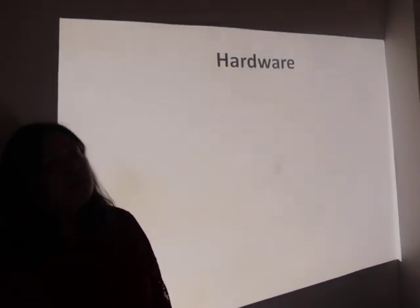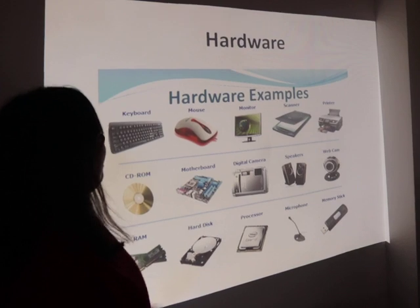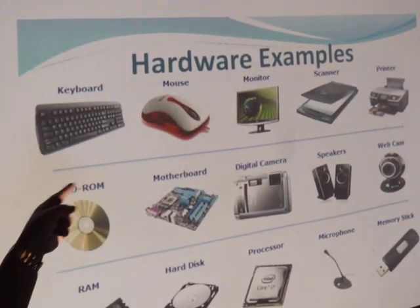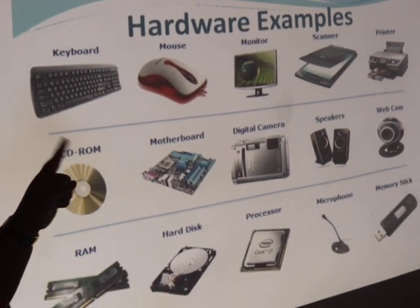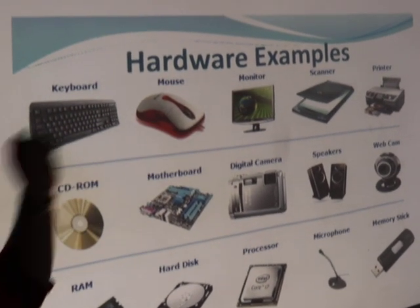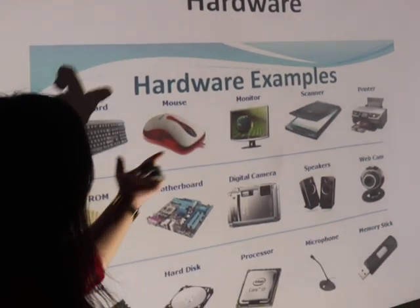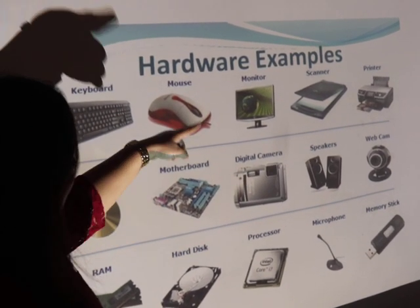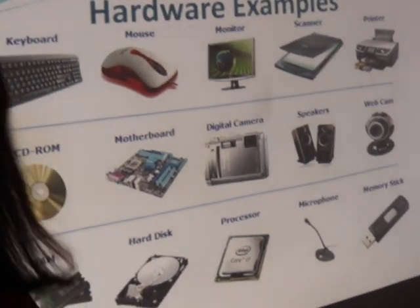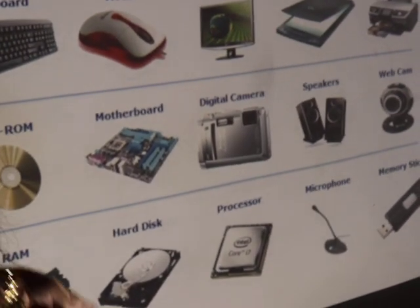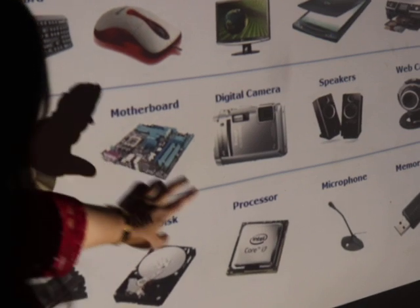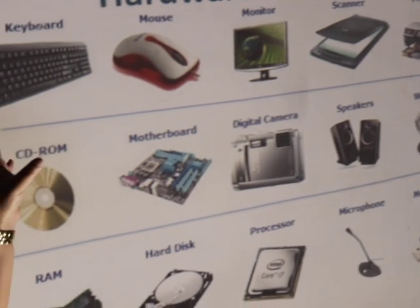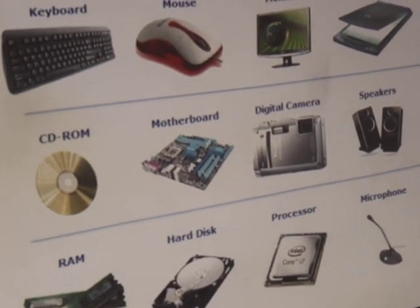Now we come to the next part — hardware. Hardware are the physical components or tangible components of the computer that we can see and touch. Here we see various examples of hardware. In the input devices, we see mouse and keyboard. Then output devices include monitors and speakers. We have storage devices such as CD-ROM and hard disk. And we have internal components like motherboard and processor. These are all devices that can be seen with the naked eye or touched — so these are all examples of hardware.